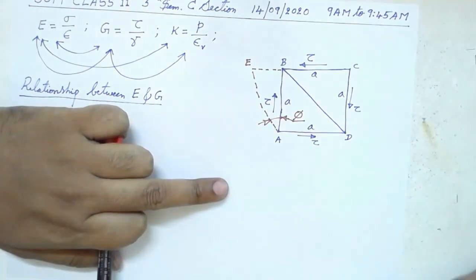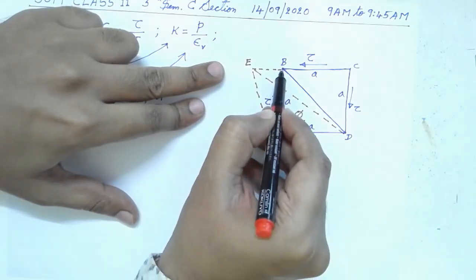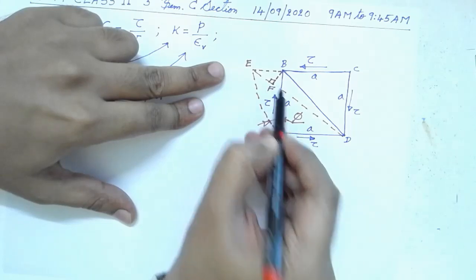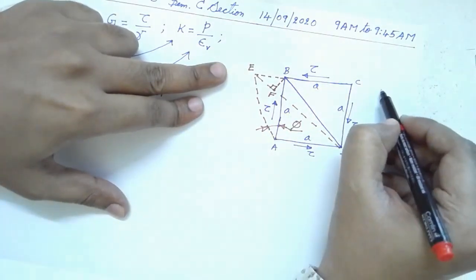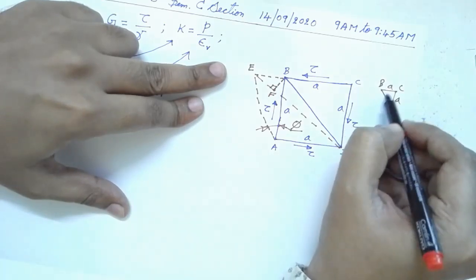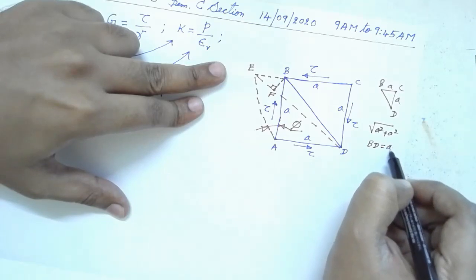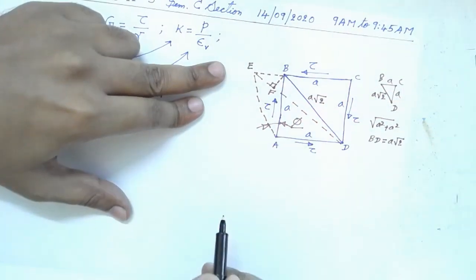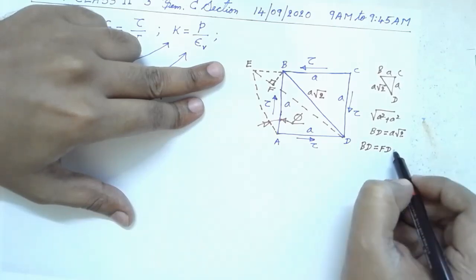Diagonal BD is deformed to DE. If I drop a perpendicular from point B on DE, I call that point F. So BD will be equal to FD. Taking the right-angle triangle with sides BC = A and CD = A, BD will be the square root of A² + A², so BD = A√2. Here also BD length will be A√2, so BD = FD = A√2.